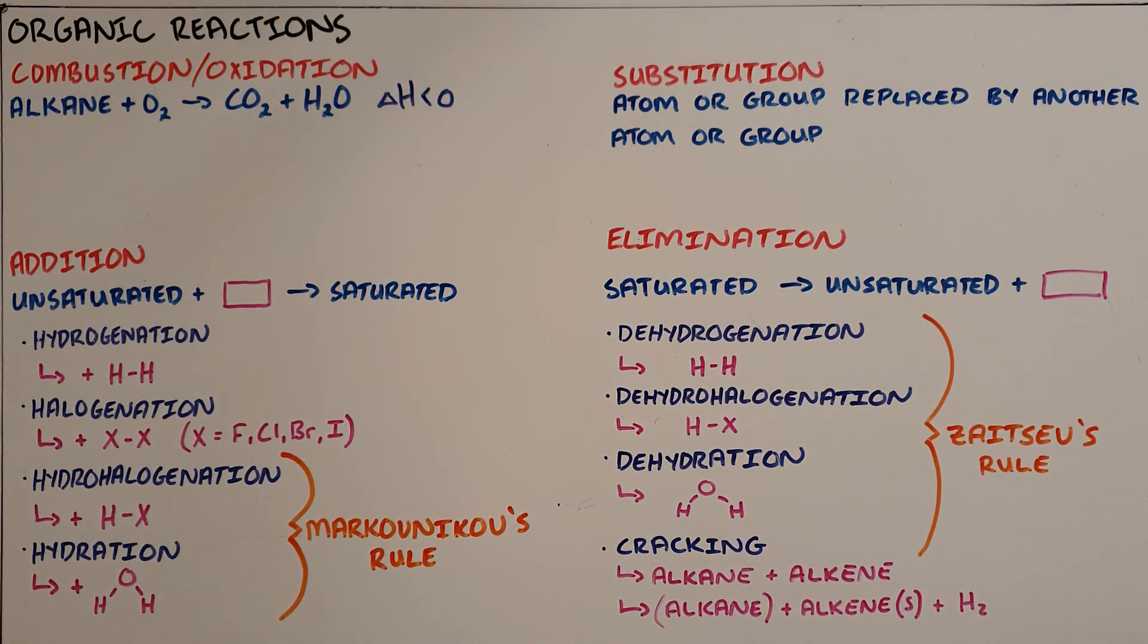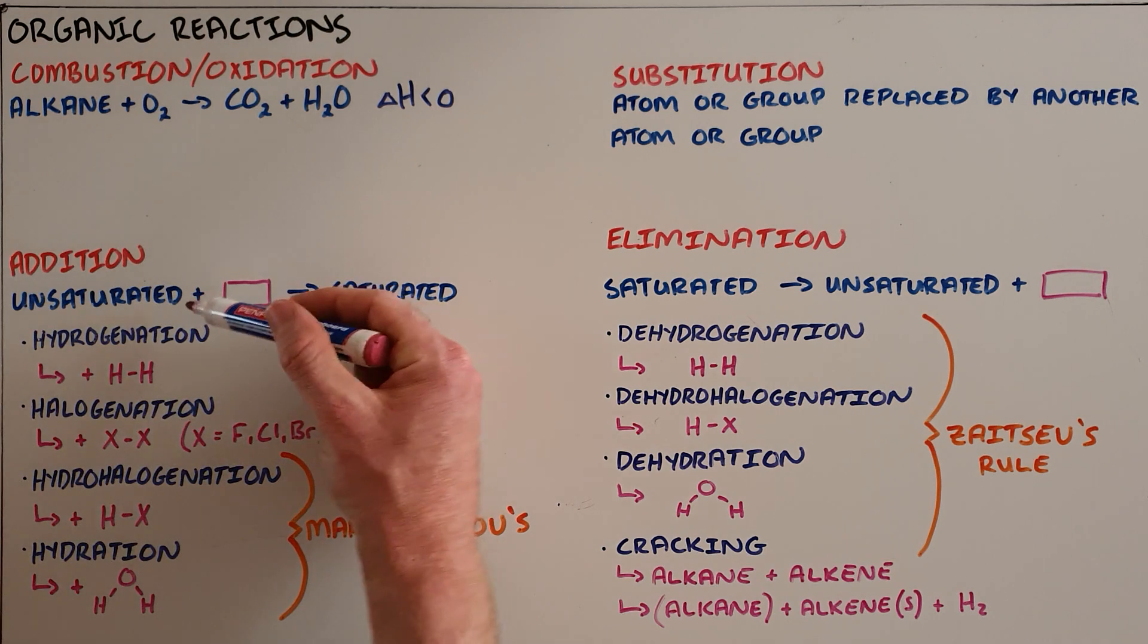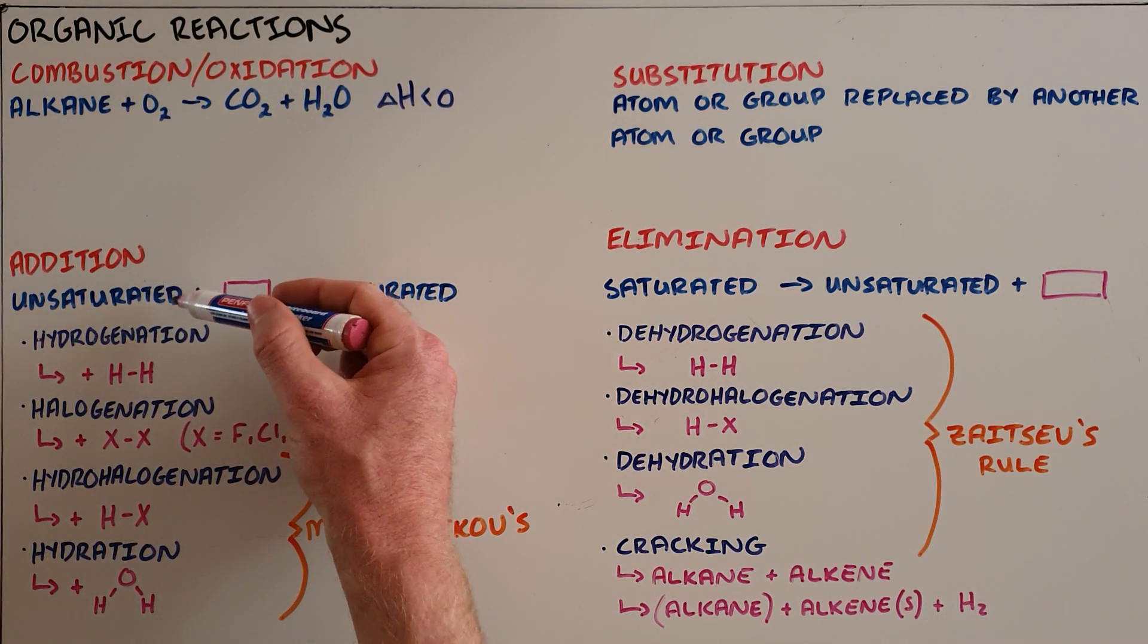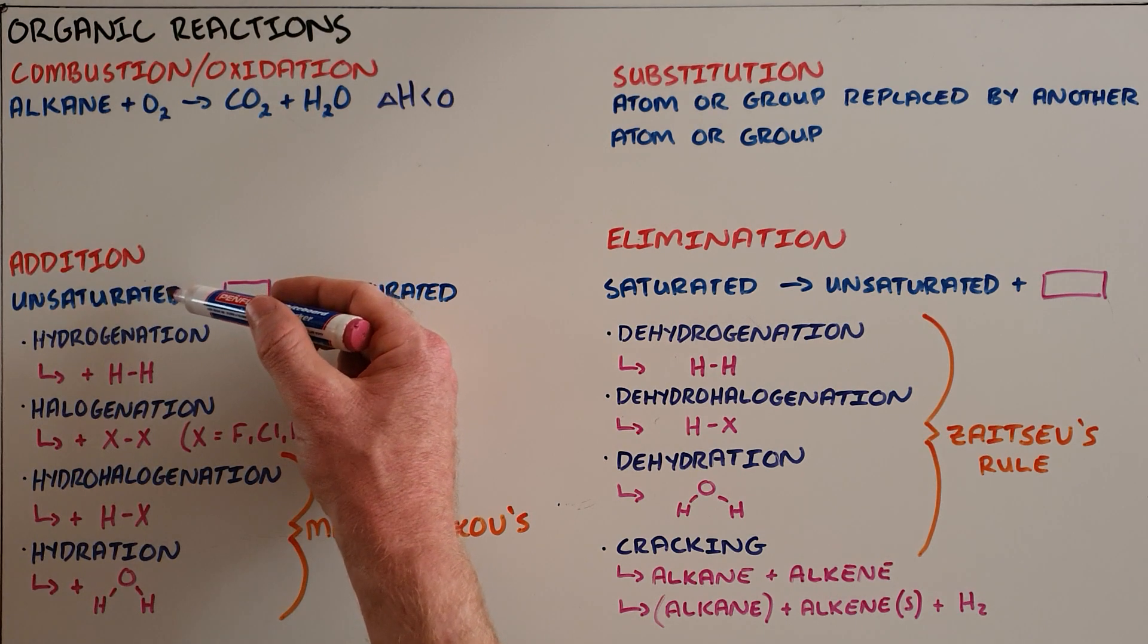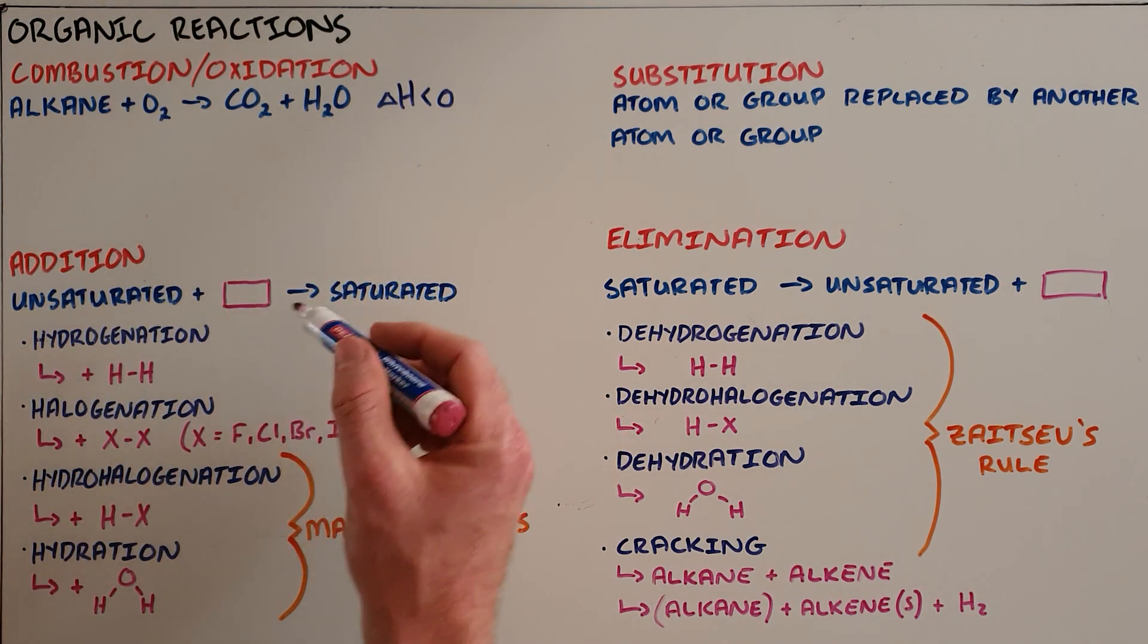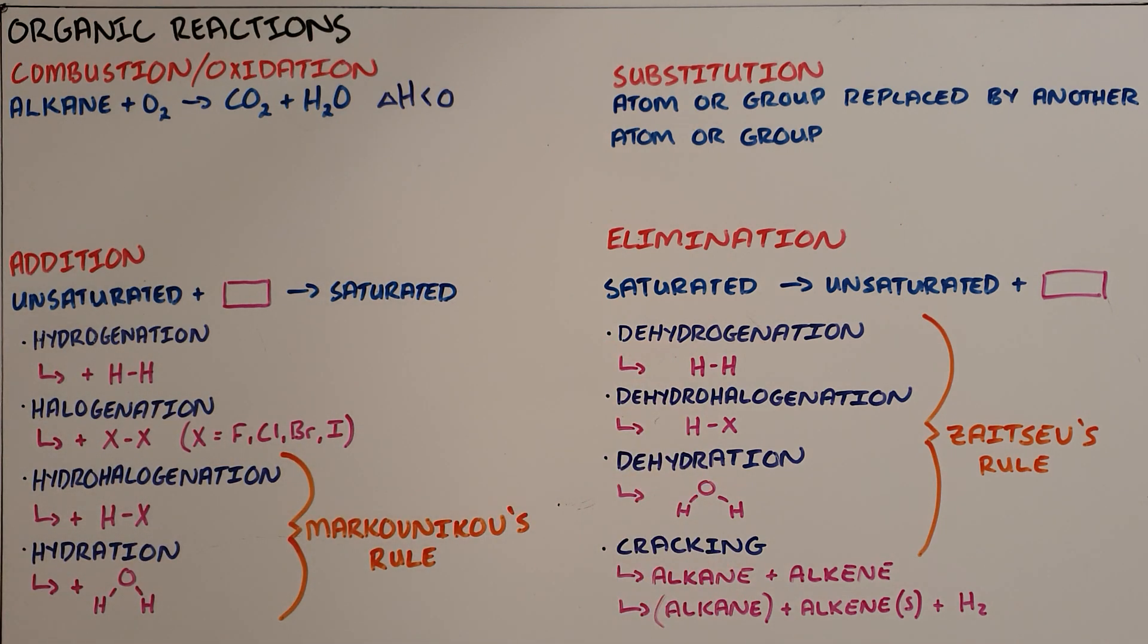The second type of reaction is called an addition reaction, and an addition reaction is the reaction in which an unsaturated compound—unsaturated referring to a compound here that contains either double or triple bonds—is combined with some small molecule to form a saturated compound, again saturated here referring to a molecule that only contains single bonds.